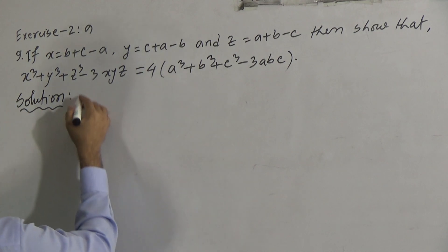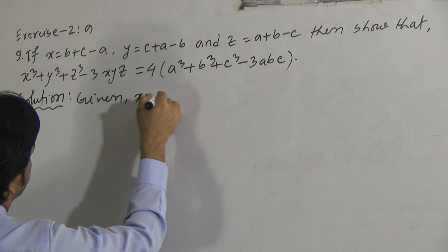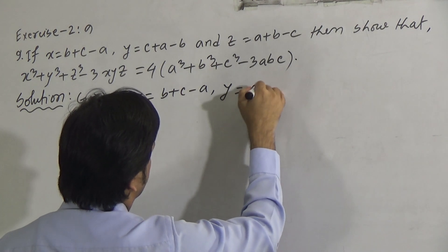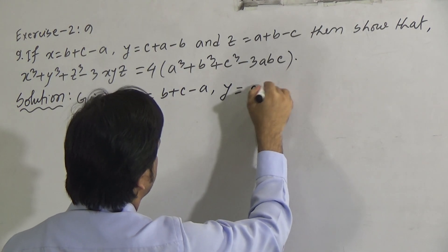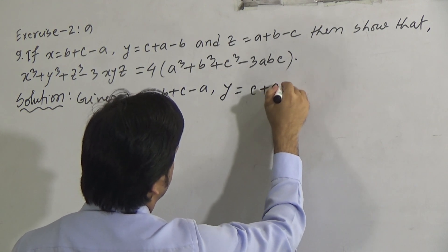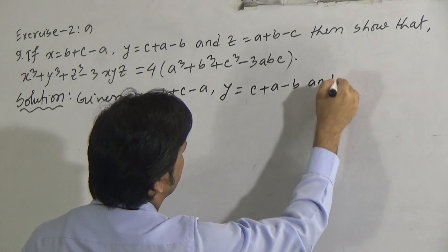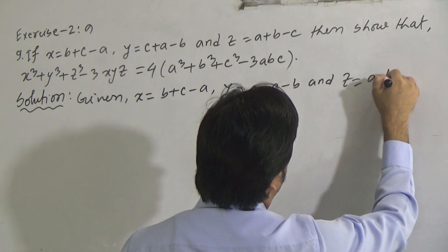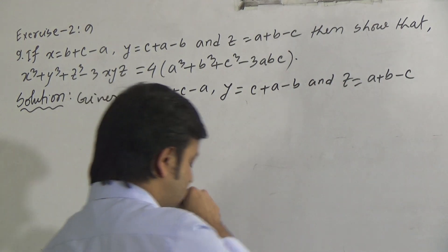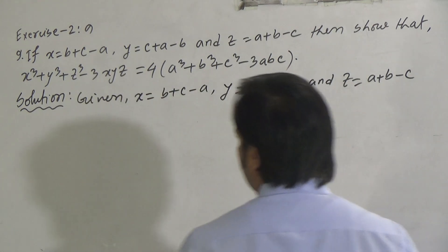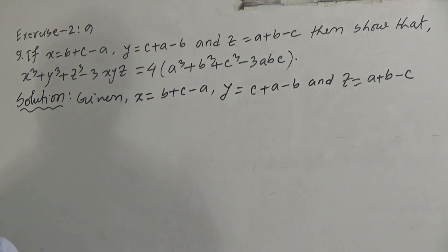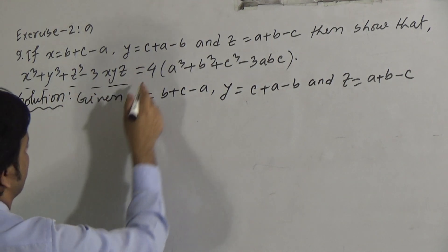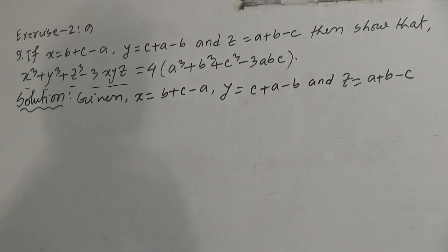So, the given values are: x = b + c − a, y = c + a − b, and z = a + b − c. We need to show x³ + y³ + z³ − 3xyz = 4(a³ + b³ + c³ − 3abc).